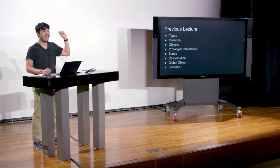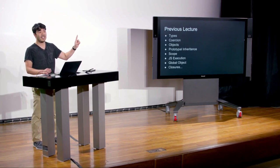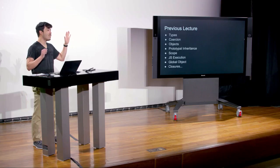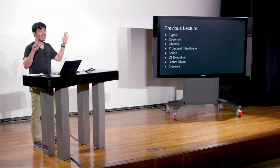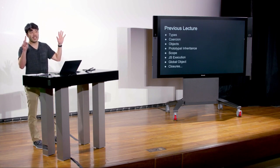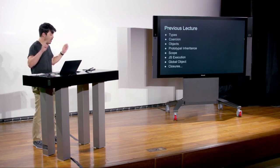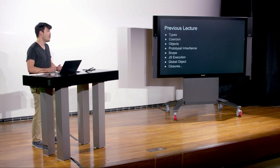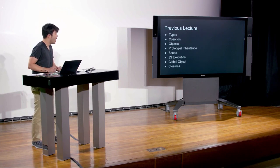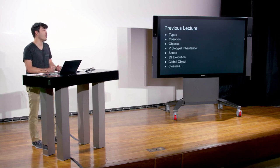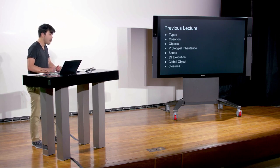String, number, null, undefined, object, symbol, and Boolean. We talked about coercion, which was the process by which we change one type to another. Objects, of course, the non-primitive type. And prototypal inheritance. Who can remember what prototype inheritance was? This was one of the complex topics from last week.